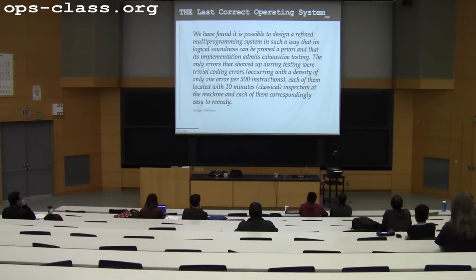So there's been some more recent work on provably correct micro kernels. But some of the earliest computer systems, particularly built by people like Dijkstra, who obviously had sort of a theoretical bent, had this as a goal. So he claimed in the THE operating system, which was designed back in the 50s or 60s, that we have found it is possible to design a refined multi-programming system in such a way that its logical soundness can be proved a priori. And its implementation admits exhaustive testing. The only errors that showed up during testing were trivial coding errors, occurring with the density of only one per 500 instructions, each of them located within 10 minutes. And this operating system was quite slow. Of course, everything was slow back then.